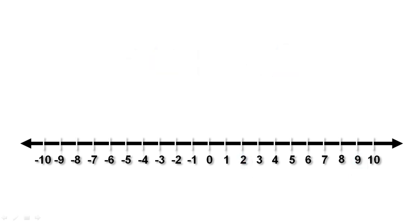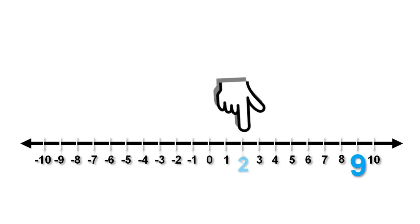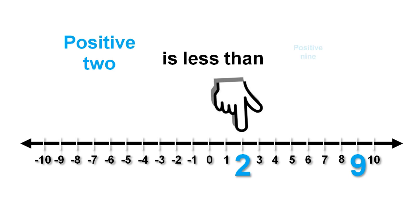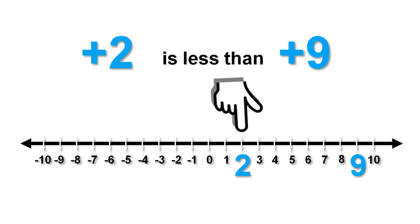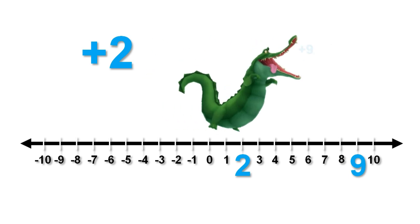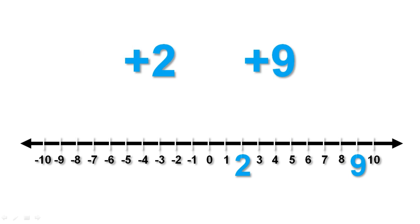If we read the number line from right to left, or going down the number line, the numbers get smaller. Positive 2 is further to the left than positive 9, so we can say that positive 2 is smaller than positive 9. Again, we have a special way to write this, and again we are going to use the greedy crocodile. He still wants to eat the bigger number, and the shape of his jaws gives us the shape of the less than symbol. This says that positive 2 is less than positive 9.